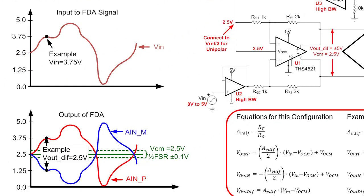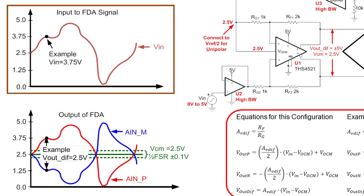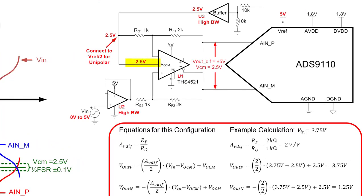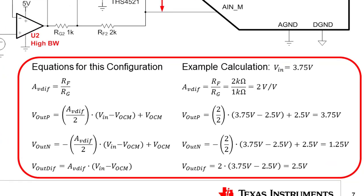Some example signals are shown on the left-hand side of the slide. The input is shown at the top in brown, and is unipolar ranging from 0 volts to 5 volts. The outputs are shown below in red and blue, with an output range of plus or minus 5 volts. Notice that the two output signals are symmetrical about the common mode voltage, which is a constant 2.5 volts. The FDA VOCM voltage sets the common mode signal. The common mode control is critical because most fully differential SAR data converter specifications require the common mode to be at a constant voltage equal to half the reference voltage. The input-output relationship equations are given in the red box, and are used for an example input of 3.75 volts, computing the inverting and non-inverting output voltages as well as the differential output.